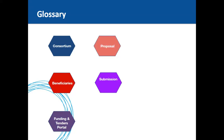For submission, once you have your proposal and respect the deadline, you submit it on the Funding and Tenders Portal. Apart from the templates, everything will be done electronically. During evaluation, when your proposal is admissible and eligible, independent experts follow specific evaluation criteria — proposals are scored against selection and award criteria based on excellence, impact, and quality and efficiency of implementation.